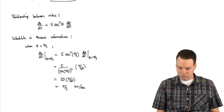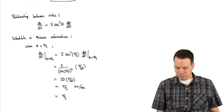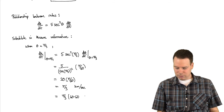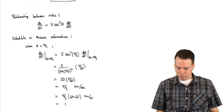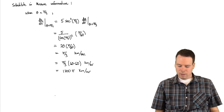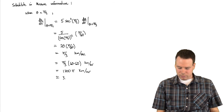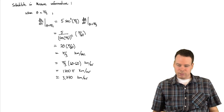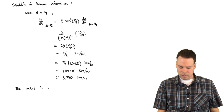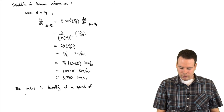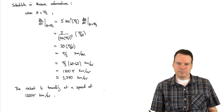Now let's convert to kilometers per hour. Pi/3 kilometers per second × 60 seconds per minute × 60 minutes per hour: 3 goes into 60 leaving 20, and 20 × 60 = 1200. So the answer is 1200π kilometers per hour, which is approximately 3770 kilometers per hour. The concluding statement: the rocket is traveling at a speed of 1200π kilometers per hour.